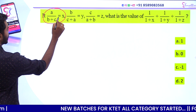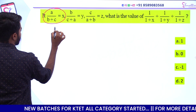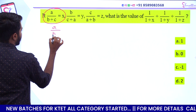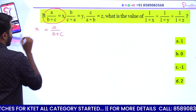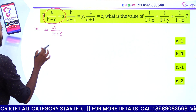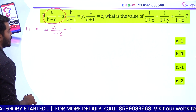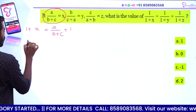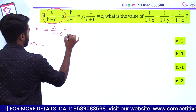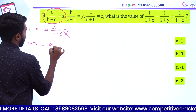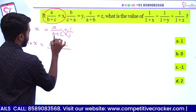a by b plus c is equal to x. We are working with these values. That is, 1 plus x is equal to a plus b plus c divided by b plus c.